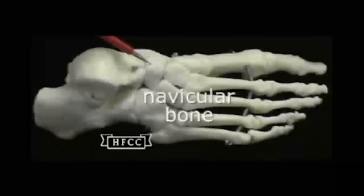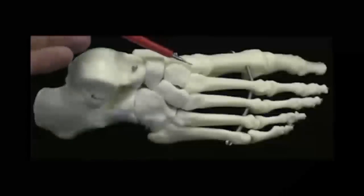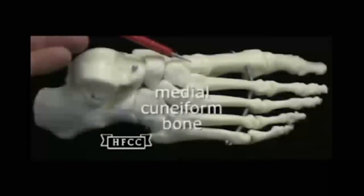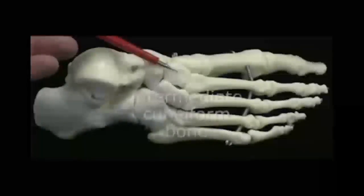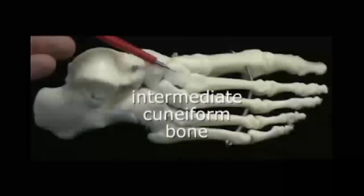The navicular bone right there and then this one here at the base, this medial cuneiform bone, at the base there of the first toe and then the intermediate cuneiform.